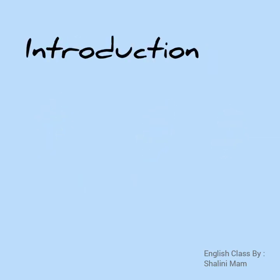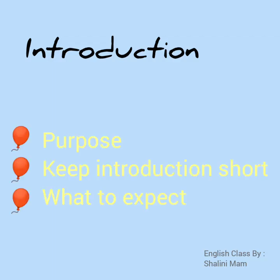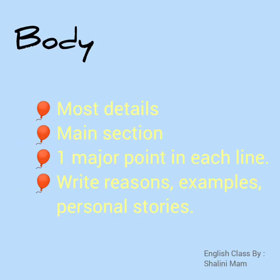Let's begin with introduction. Remember that the introduction is the very first part of your paragraph, so it is very important to make it interesting. Introduce your topic in these lines, write about what to expect, and tell the reader the purpose of your paragraph. Keep your introduction lines short — try to wrap up your introduction in two or three lines only. After writing a few introductory lines, you will move on to write the body section. This section is the main section and you will include most details here. You will take up one major point in each sentence, which will be related to reasons, examples, and personal stories.